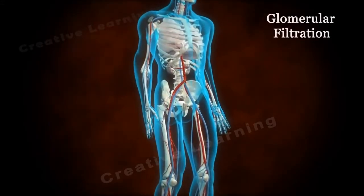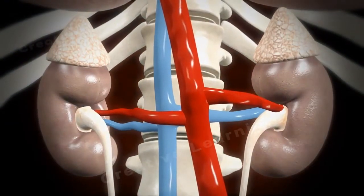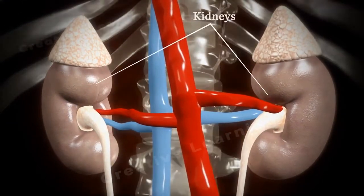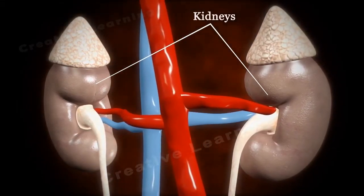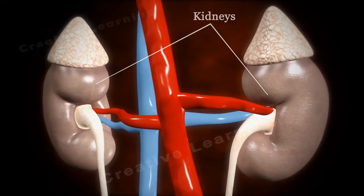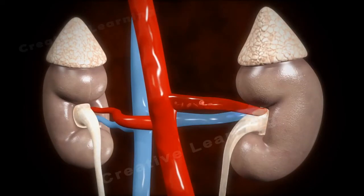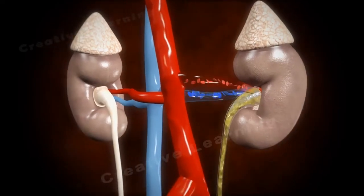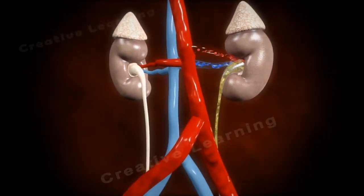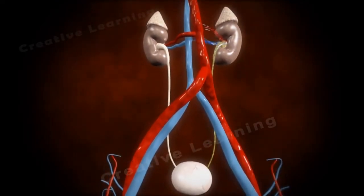Glomerular Filtration. Kidneys are bean-shaped organs which filter blood. They remove waste substances from the blood and regulate water and electrolyte concentrations within the body fluids. The end product of this function is urine, which is excreted outside of the body through the urethra, containing wastes, excess water, and excess electrolytes.